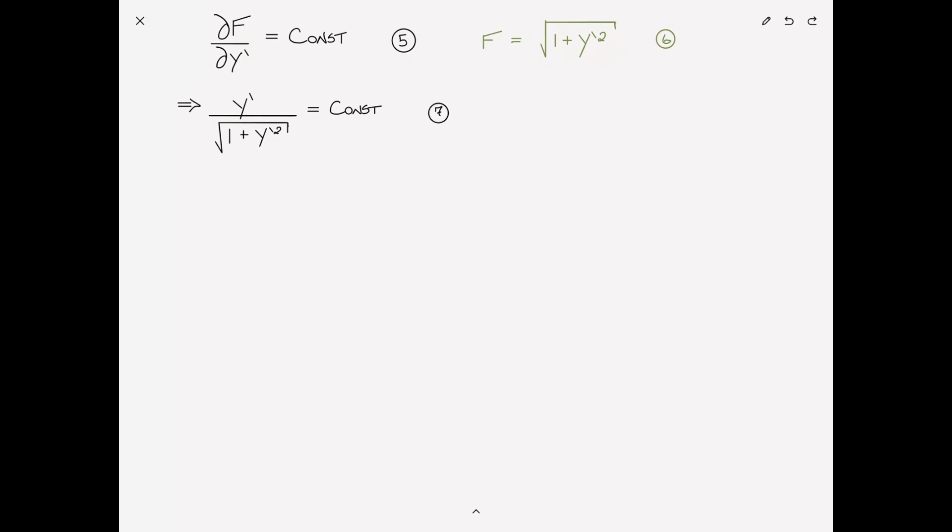And then it should be obvious just by inspection that the only way the left hand side could equal a constant is if y prime itself is a constant. So, of course, if y' is equal to c1, which is just dy/dx, we can integrate that with respect to x,